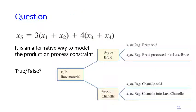Let me ask a question to check your understanding. I say that the equation x5 = (1/3)·x1 + (1/4)·x3 is an alternative way to model the production process constraint shown in the figure. Is this true or false? I will give the answer after the pause.